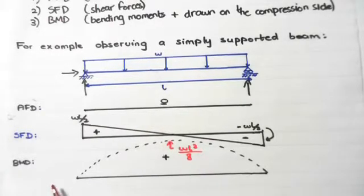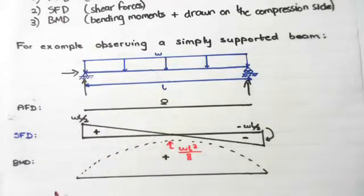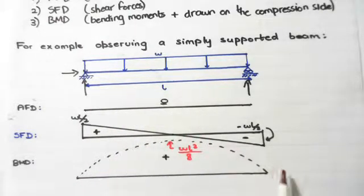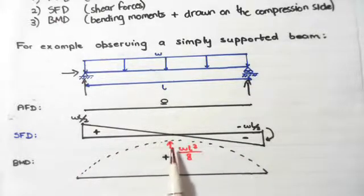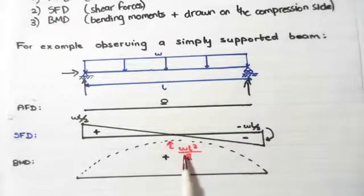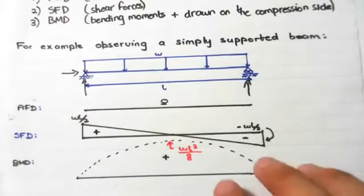The bending moment diagram for the simply supported beam looks like a concave down parabola, with a maximum bending moment of WL²/8. So that's just an example of axial force, shear force, and bending moment diagrams.